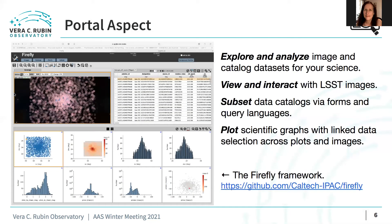The portal aspect is like a window into the LSST data. Shown here at left is an example of how data catalogs can be accessed, subsetted, and visualized with the Firefly framework in the portal. With the portal aspect, users can explore and analyze the image and catalog data sets, view and interact with LSST images, subset the data catalogs via form submission or query languages, and plot scientific graphs.